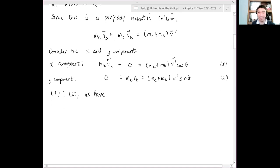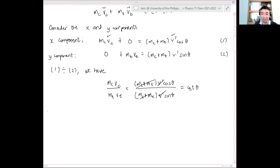What happens? Instead of mc vc over mt vt is simply mc plus mt v prime cosine theta all over mc plus mt quantity v prime sine theta. And hence, these two will cancel. The v prime will cancel. So there's no more v prime in the equation at the end and we have just cotangent theta here. Again, theta is given. And hence, solving for vc, we have that vc equals mt vt over mc multiplied by cotangent theta.